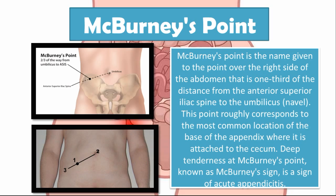McBurney's point is the name given to the point over the right side of the abdomen that is one third of the distance from the anterior superior iliac spine to the umbilicus. One third of the way from the anterior superior iliac spine, and two thirds away from the navel — this is called McBurney's point. It roughly corresponds to the most common location of the base of the appendix where it is attached to the cecum. Deep tenderness at McBurney's point is known as McBurney's sign and is a sign of acute appendicitis. Rebound tenderness and deep pain at McBurney's point is usually suggestive of a diagnosis of appendicitis.